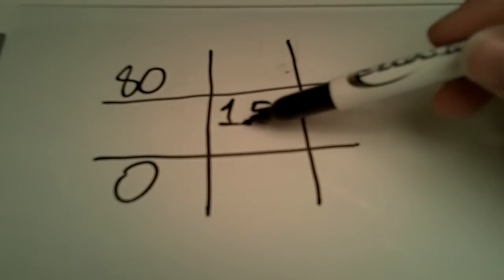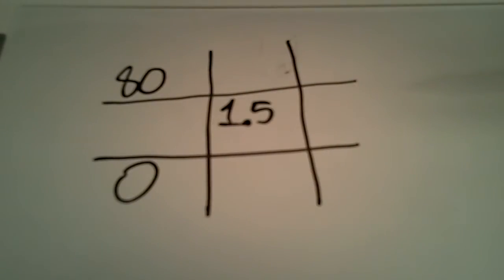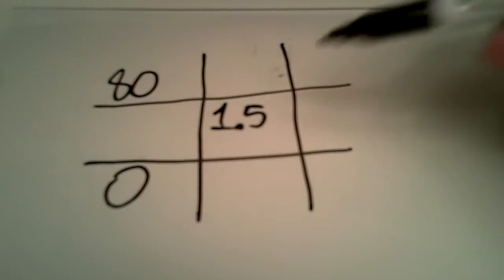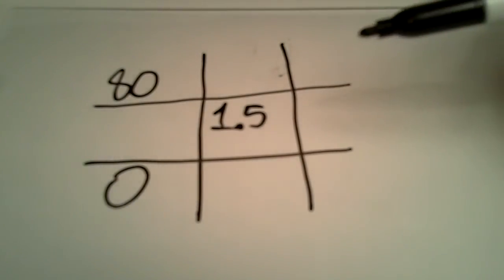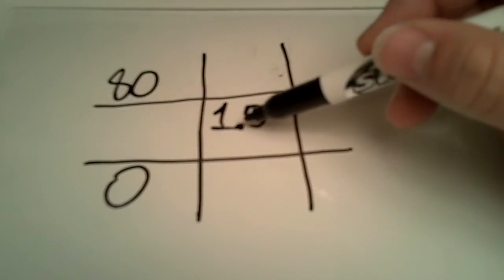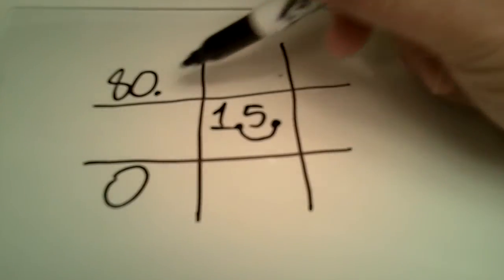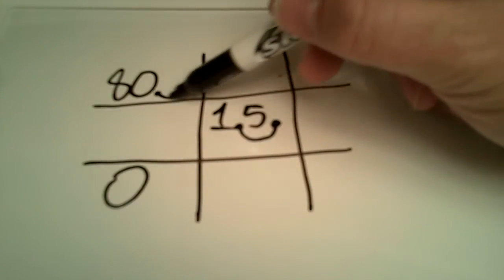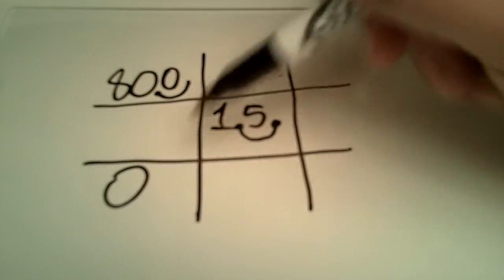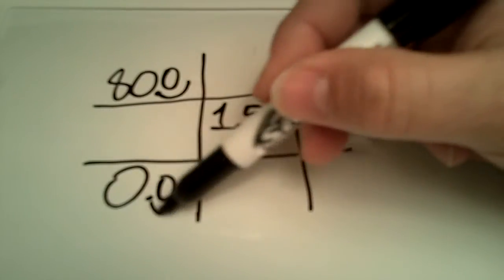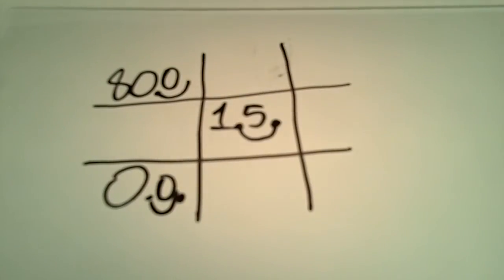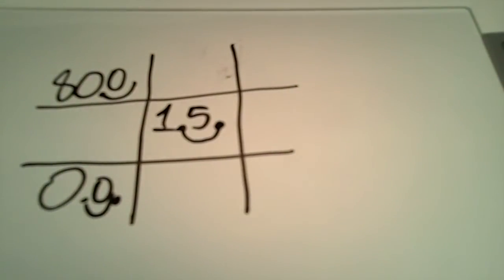Now I know a lot of you are looking at this decimal and it's irritating — I hate decimals also. But just like in an equation, you can actually take this decimal and just move it over one place. As long as you do it with all the numbers, then you're okay. So what we can do now is just run it just like a regular alligation.